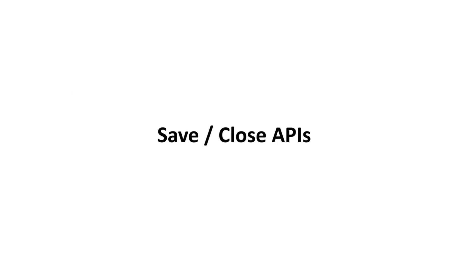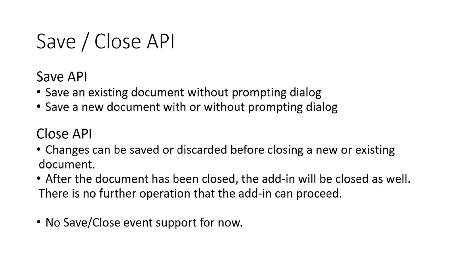The next set is the save and close APIs. For save and close, we now provide two APIs so that you can save an existing document or save a new document. There are different cases regarding whether a prompting dialog is needed to specify a filename. For the close APIs, we also provide support for new and existing documents. The current behavior is that once you call the close API, the add-in will disappear and you lose control of the add-in. This could be enhanced in the future, but for now, you will lose control there.